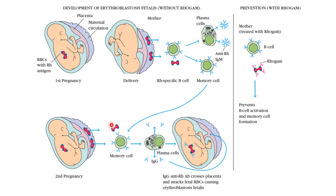After fetal RBCs reach the mother's circulation, the memory cells become active and produce further plasma cells. These plasma cells produce antibodies, which then reach the fetal circulation. Once there, these antibodies destroy the RBCs of the fetus, and the condition called erythroblastosis fetalis arises.